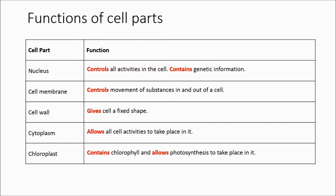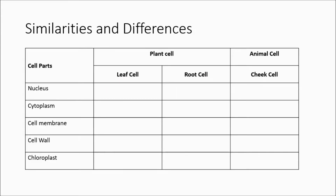Let us now compare the similarities and differences of different types of cells. Here, we are looking at the leaf and the root cells, which are plant cells, and the cheek cell, which is the animal cell. All plant and animal cells have three common parts: the nucleus, cytoplasm and cell membrane.